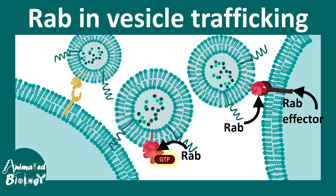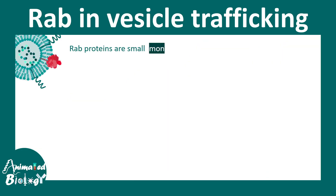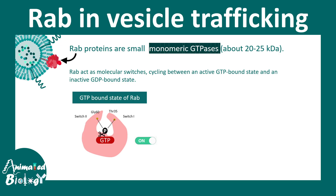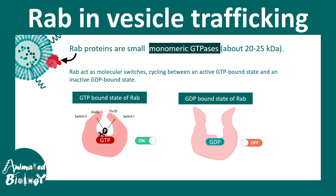In this video we'll talk about RAB proteins in context of vesicular trafficking. The RAB proteins are small monomeric GTPases which range about 20 to 25 kilodaltons in molecular weight. RAB acts as a molecular switch cycling between the GTP-bound active state and GDP-bound inactive state. In the GTP-bound state RAB protein is active, and in the GDP-bound state RAB protein is inactive. This is common for any small monomeric GTPase.